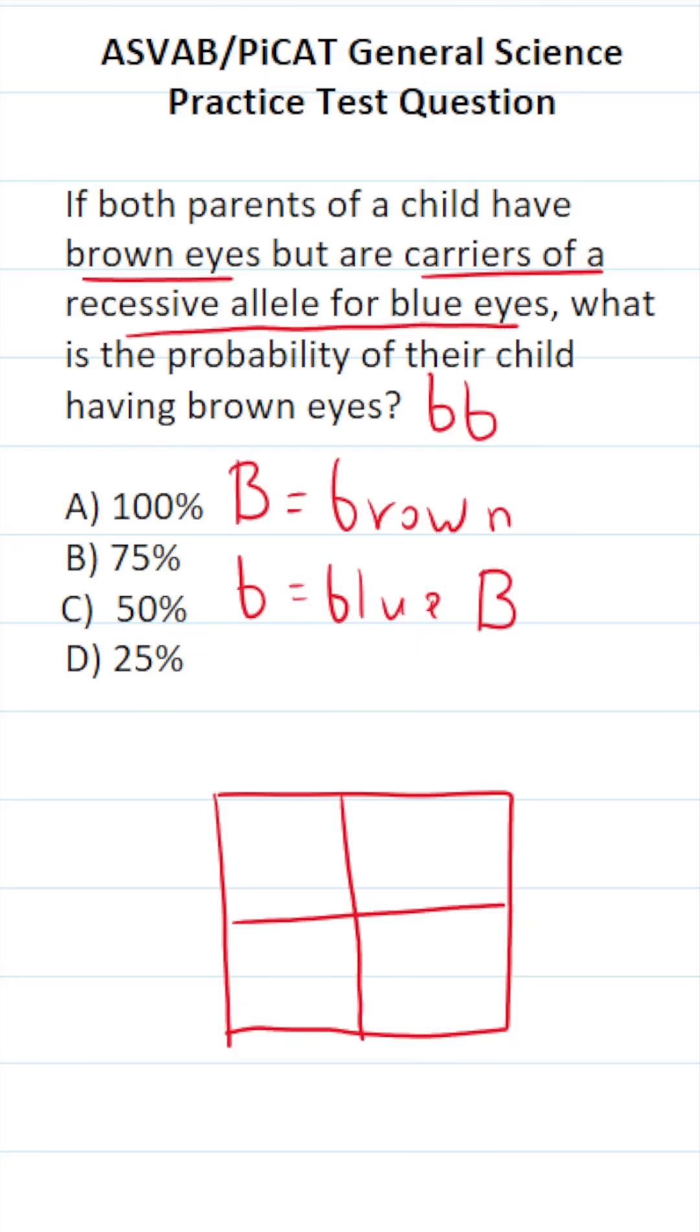Brown eyes, big B, but they carry the allele for blue eyes, so that's little b accordingly. I'm going to put the mom across the top and the dad across the side. Again, their genotype is the same, so it's going to be big B here, little b here, big B here, little b here. Let's fill this in accordingly.